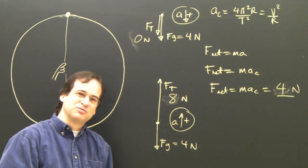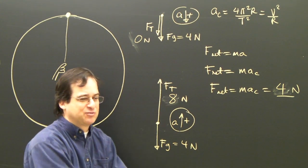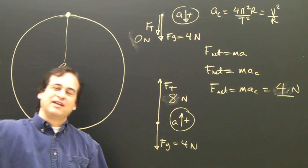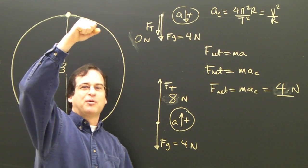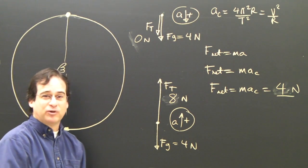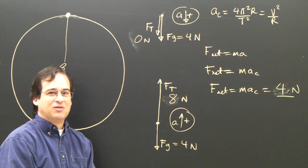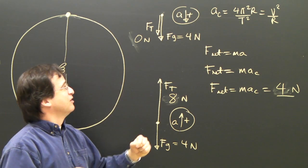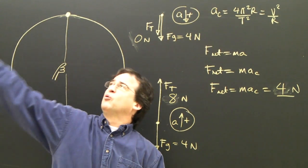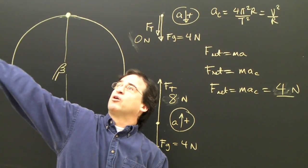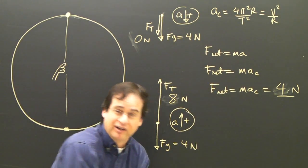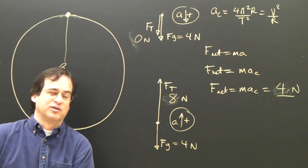Now imagine this was a bucket of water. If I swing it really quickly and need 10 newtons towards the center, at the top I'd pull with 6 newtons and at the bottom with 14 newtons. When it slows enough that gravity supplies all the centripetal force at the top, I could literally let go of the bucket — the water would stay in the bucket and continue over the top until it comes back down.